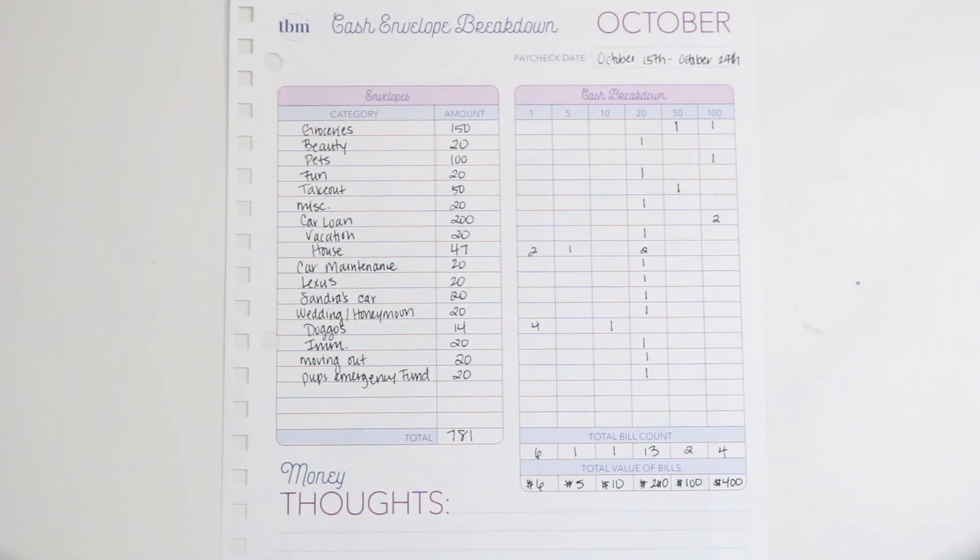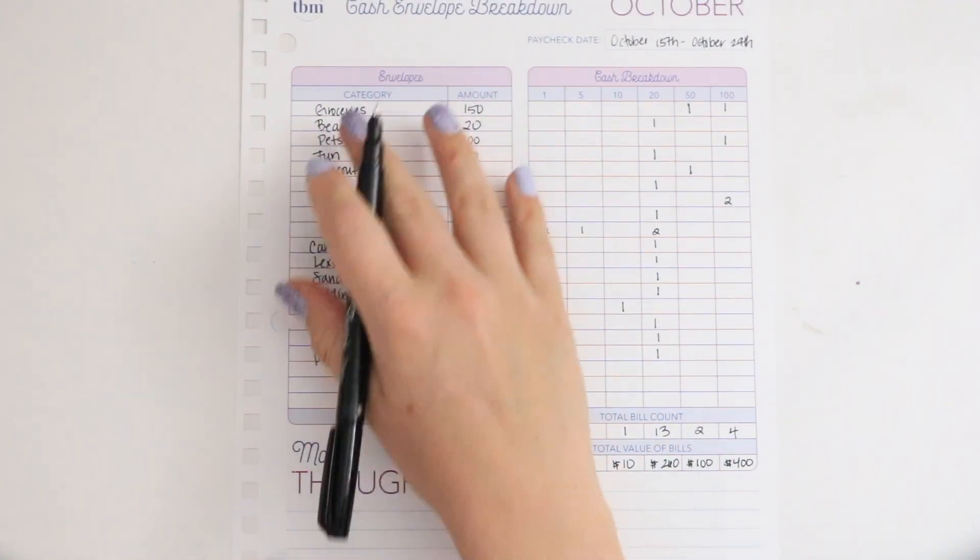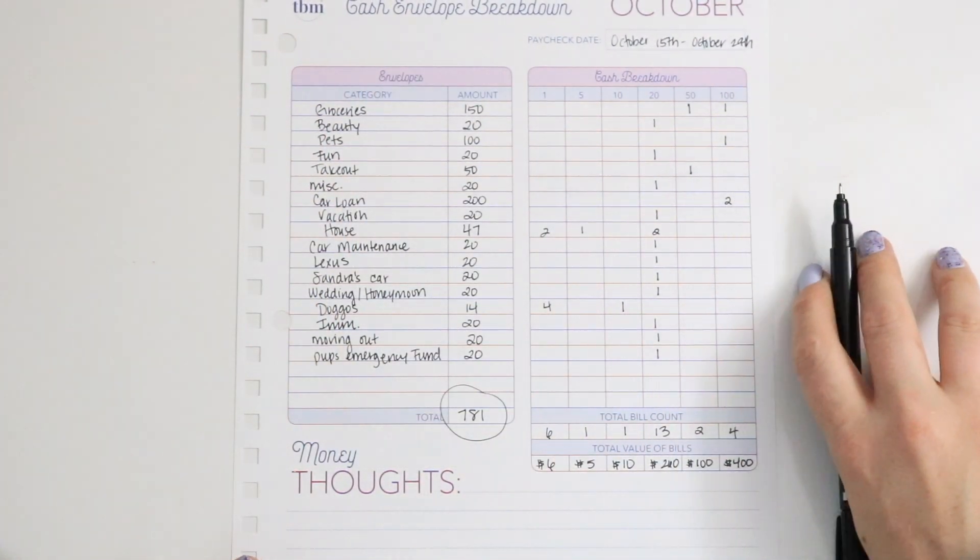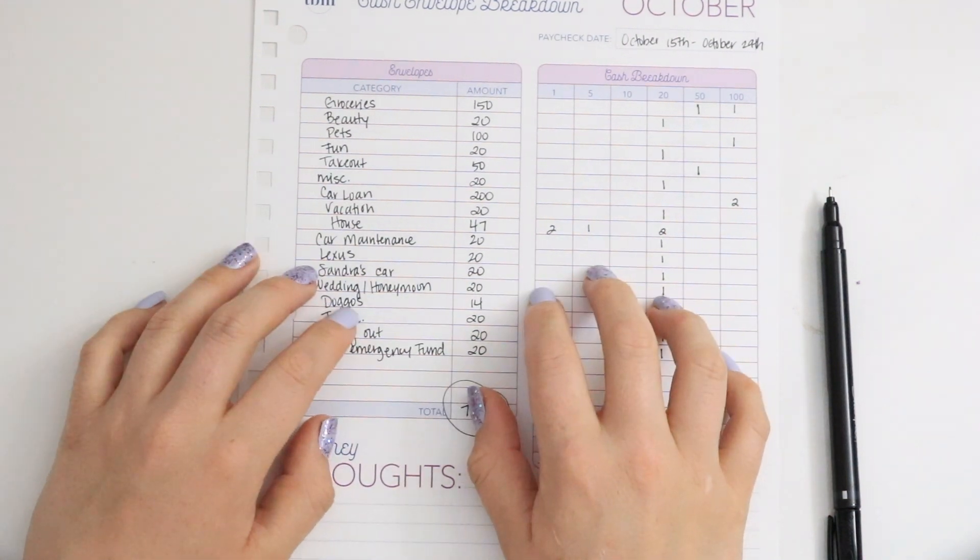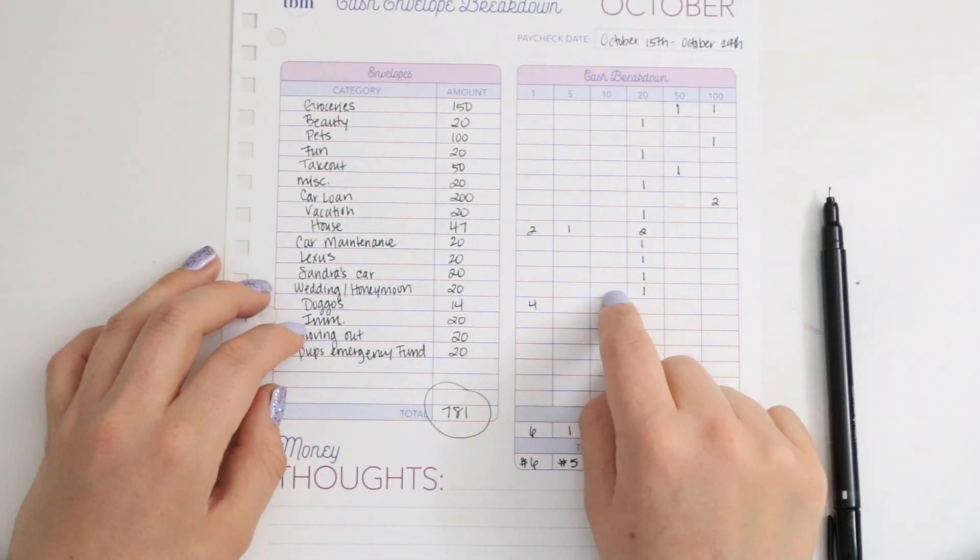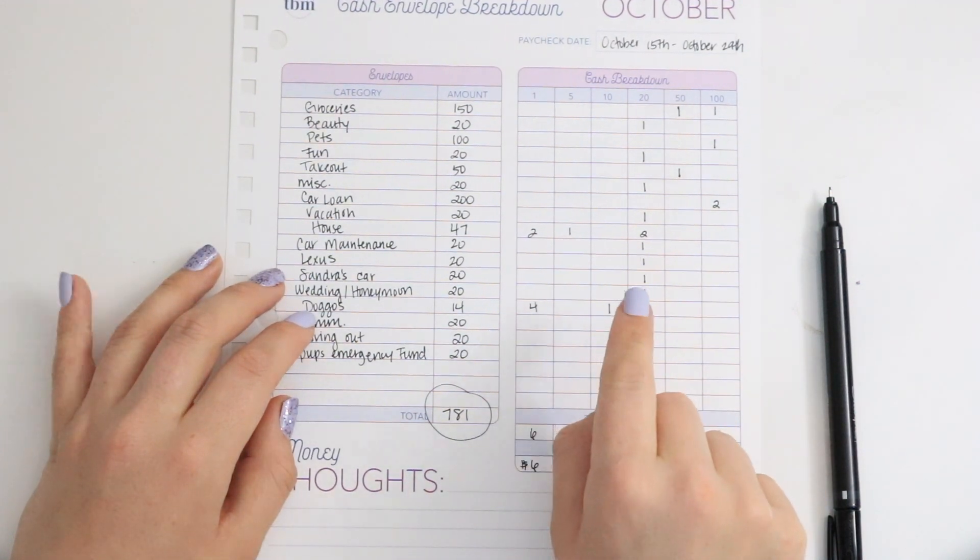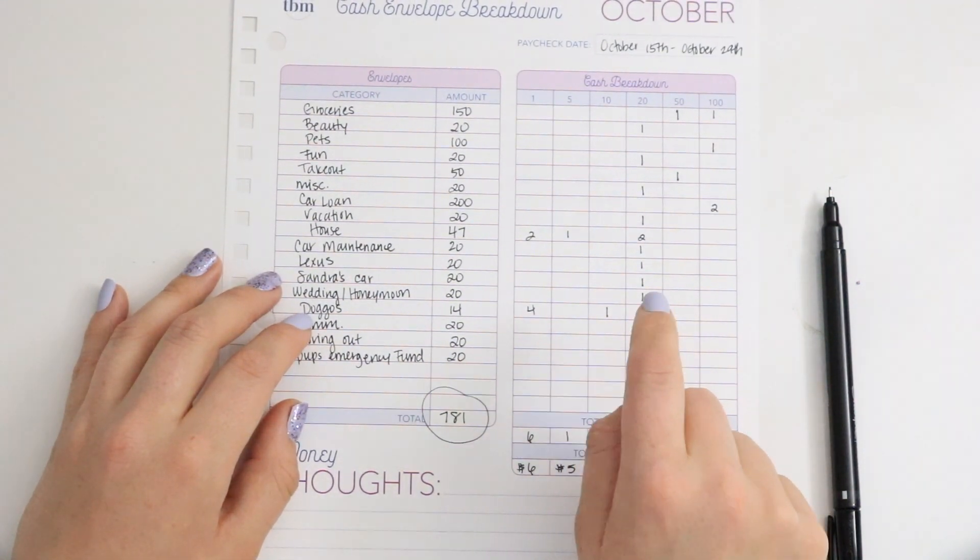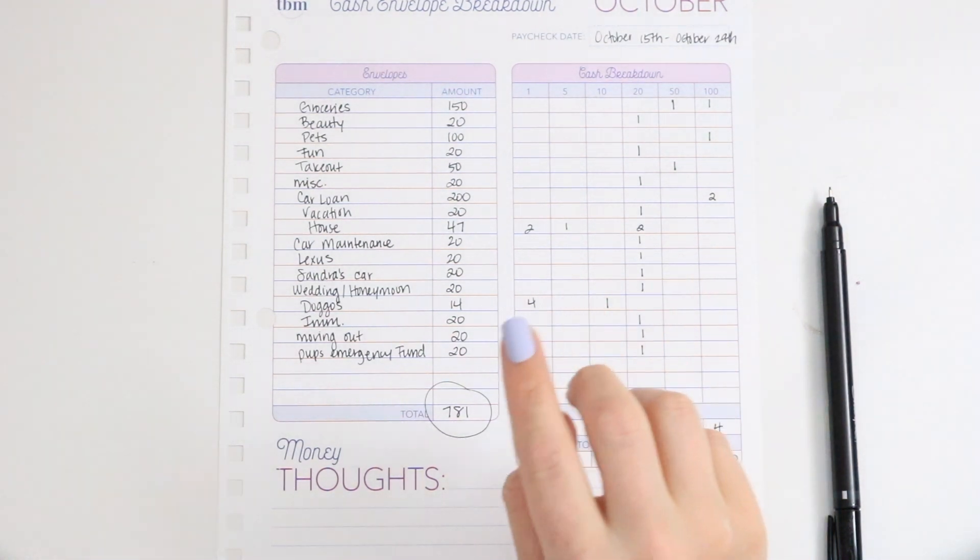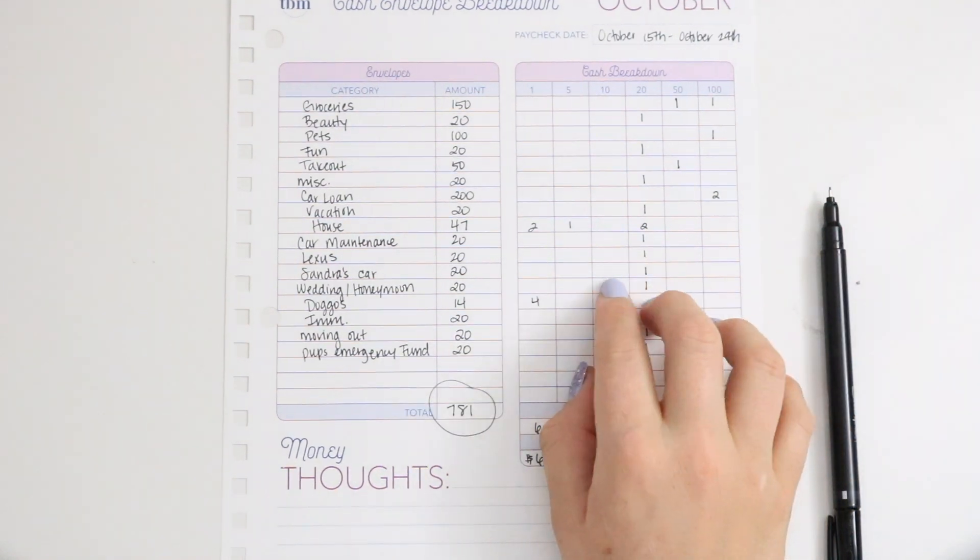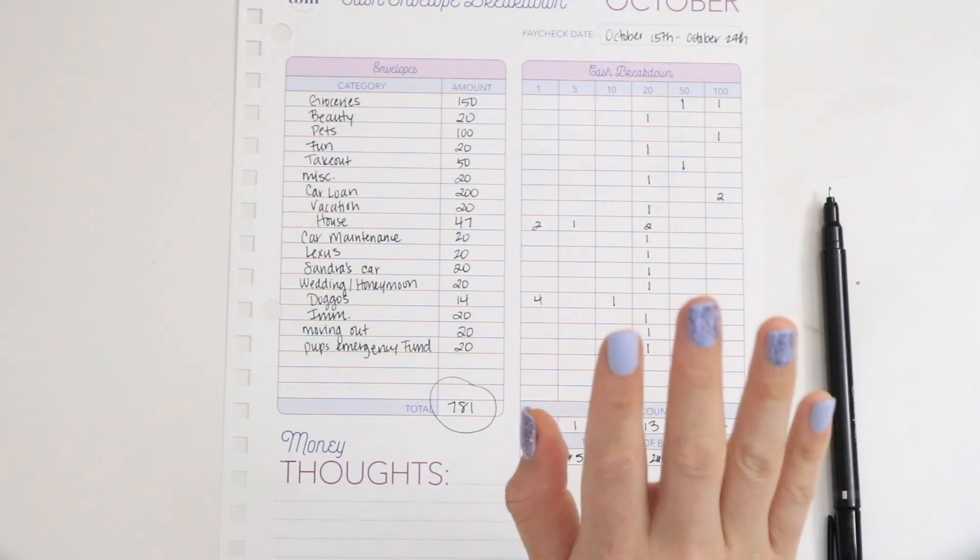All right guys, so I'm done filling this out. I am pulling out $781 to stuff all these envelopes. I also have a huge announcement. I did mention on Instagram that I am doing a 200 follower giveaway on Instagram, but I am also doing a 200 subscribers giveaway here on YouTube because I did go over 200. So that giveaway will be posted in my next video, the cash envelope stuffing video, so keep an eye out for that so you can learn how to enter and win all the great goodies that I have for you guys.